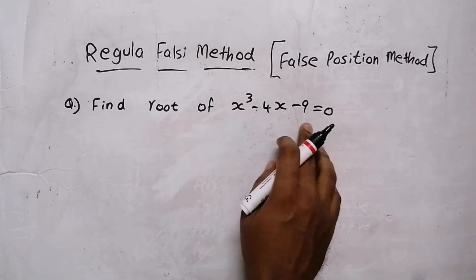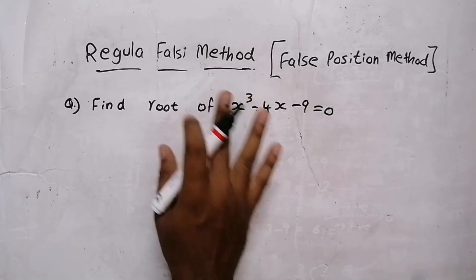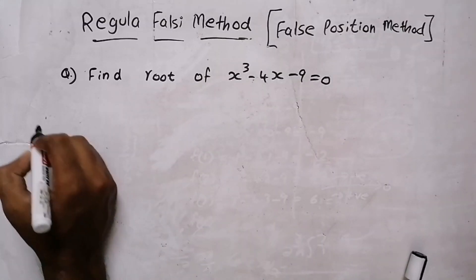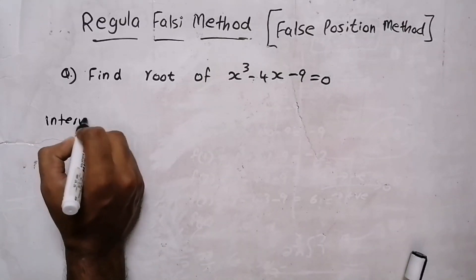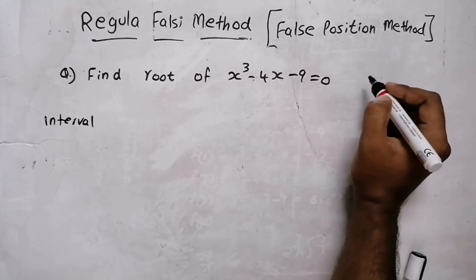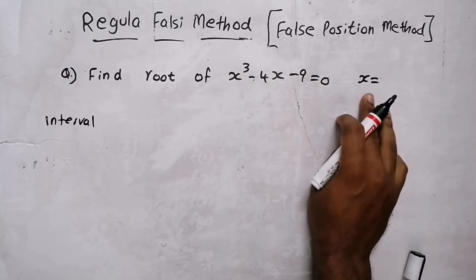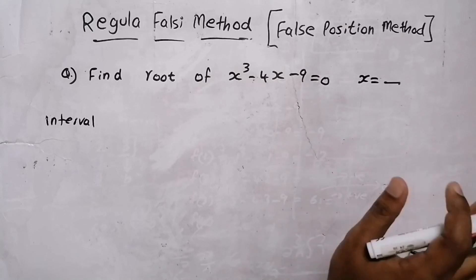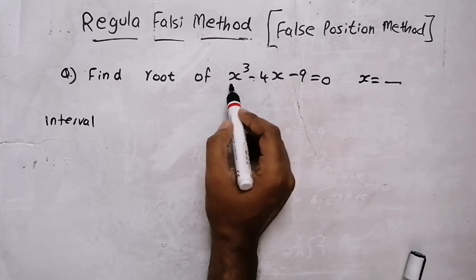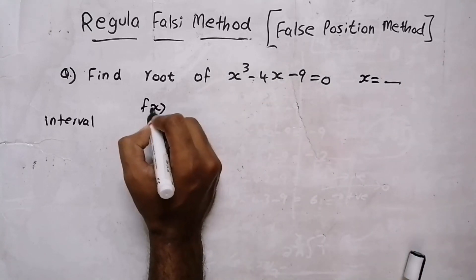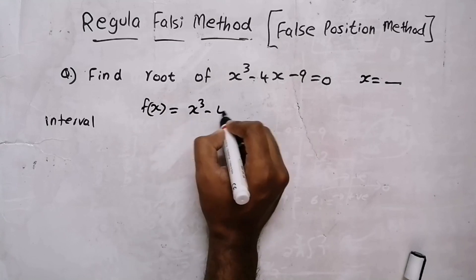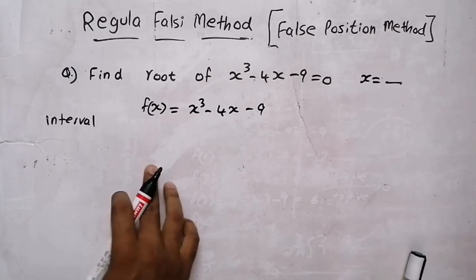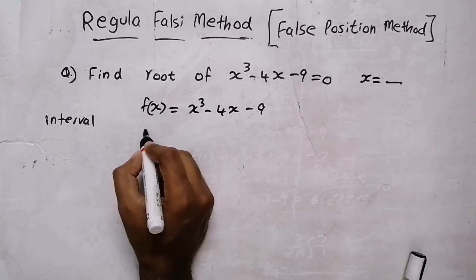Our question is x³ - 4x - 9 = 0, and we need to solve it using the Regula Falsi method. The first step is to find the interval, meaning the value between which x will lie. To find that value, we rewrite the equation as f(x), then substitute x = 0, 1, 2, 3, 4, and so on.